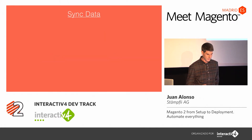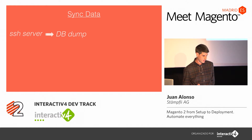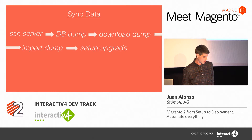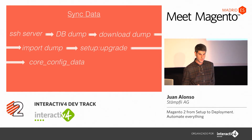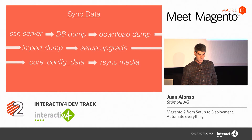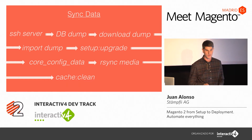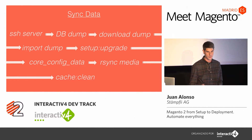As developers we like to work with real data to fix bugs or to have all the information our client is using on the website. If you want to sync the data you usually need to connect to the server, create a database dump, download it, import it locally, execute setup:upgrade to update the database schema, edit the core_config_data according to your local configuration for URLs, sync the media if you're a front-end developer working with real media data, and finally clean the cache. These are many more steps than the installation, and these are steps you might need on a daily basis.